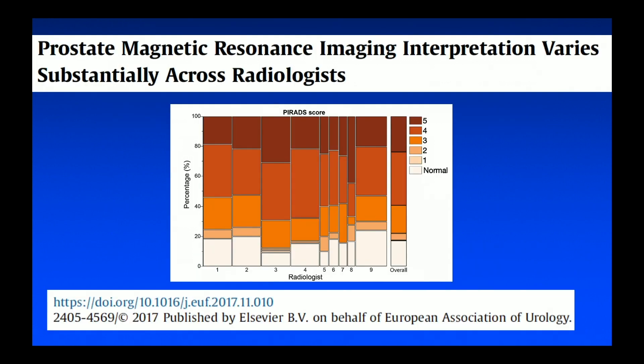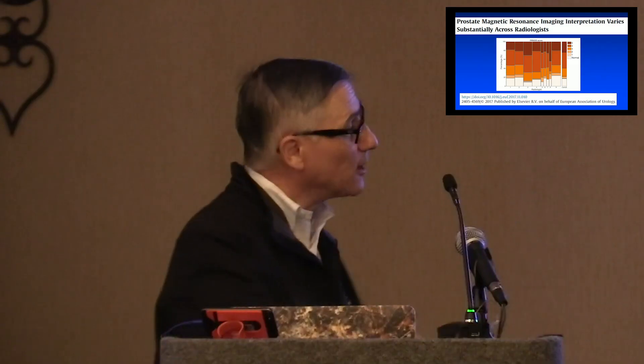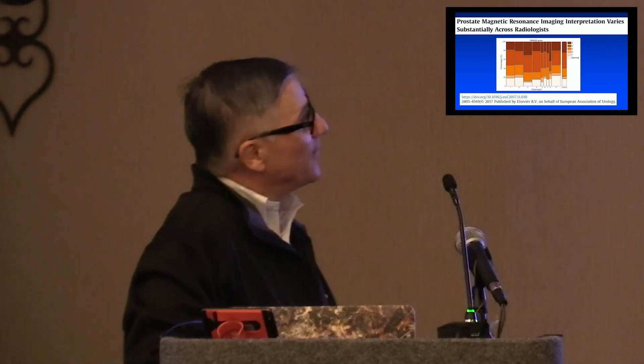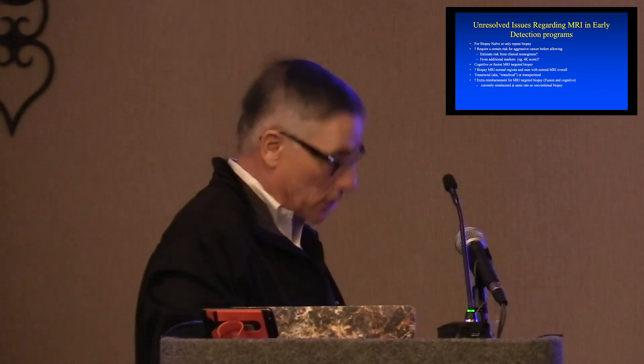Data from Stanford show that even there, where nine radiologists read MRIs, there are significant variations in how they assign a given MRI into PI-RADS 5, 4, 3, etc. The belief is that in the community it's even worse, because Stanford has perfect equipment, a lot of training, and a lot of people. And that's one of the real limitations of MRI.